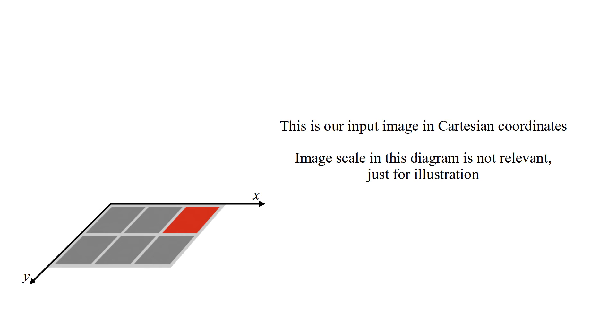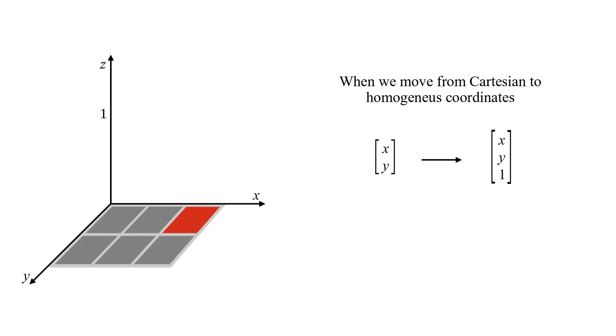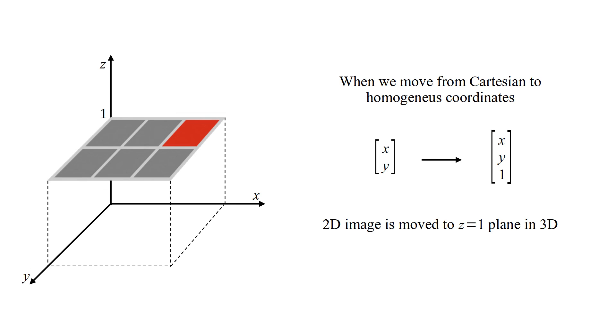This is our input image in Cartesian coordinates. The image scale in this diagram is not relevant, just for illustration. When we move from Cartesian to homogeneous coordinates, 2D image is moved to z equals one plane in 3D. So, 2D image is embedded in 3D.